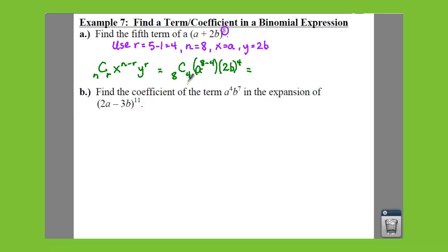Now, if you want to find your coefficient, remember to find your coefficient, you take 8 factorial over 4 factorial times 4 factorial. So you end up and get a 70 out front. And then we have an a to the 4th. And then if you have 2b to the 4th power, that ends up and gives you, well, 2 to the 4th is 16b to the 4th.